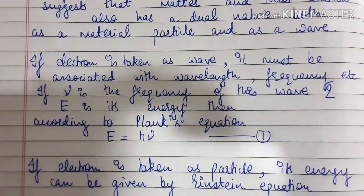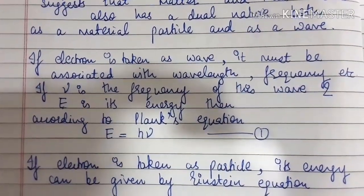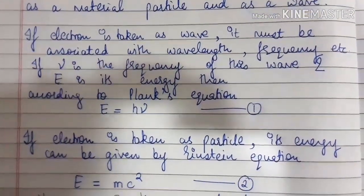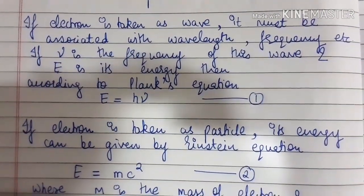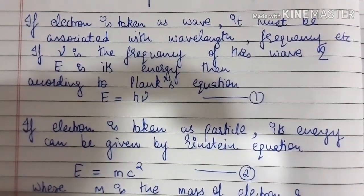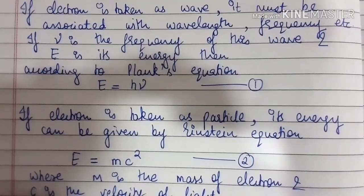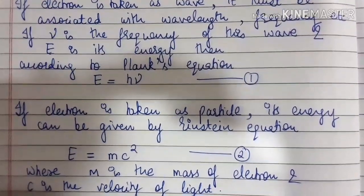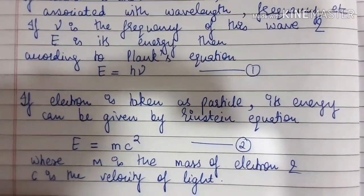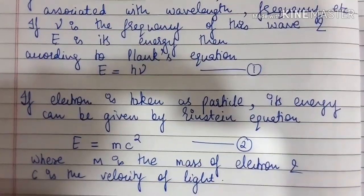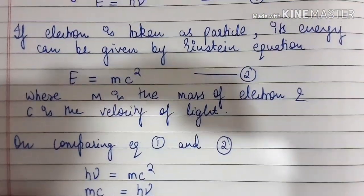then according to the Planck equation, E = hν — we take this as equation one. If the electron is taken as a particle, its energy is given by the Einstein equation, which is E = mc², where m is the mass of the electron and c is the velocity of light. So on comparing equation one and equation two,